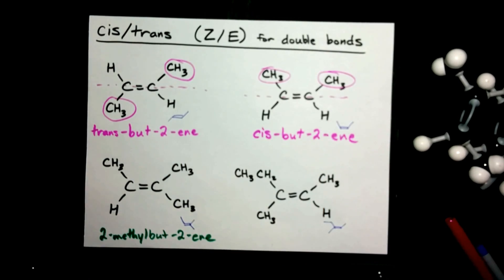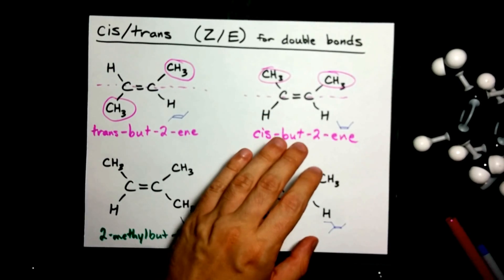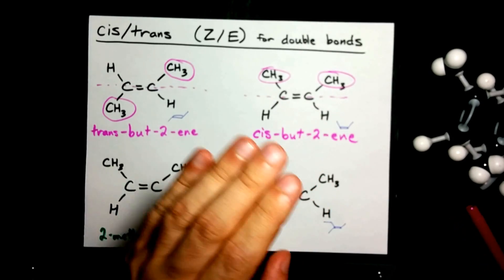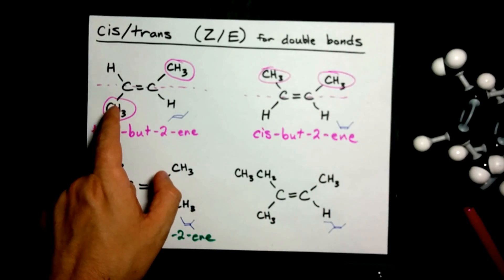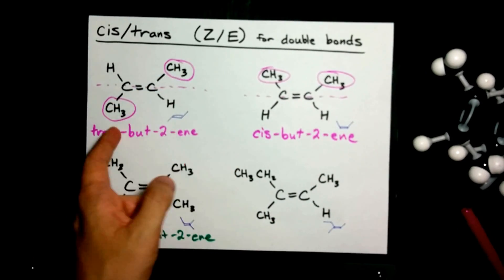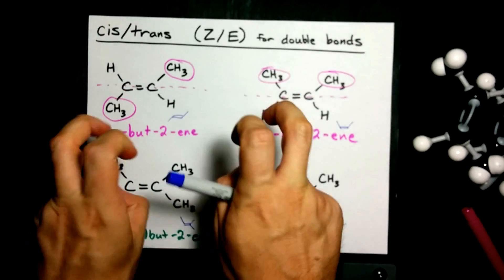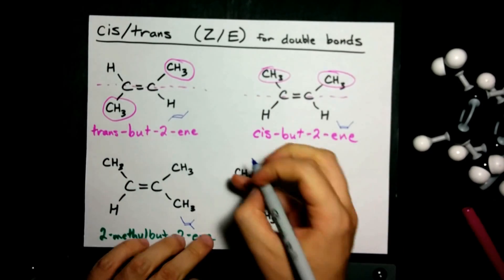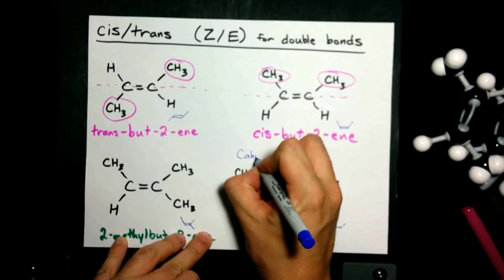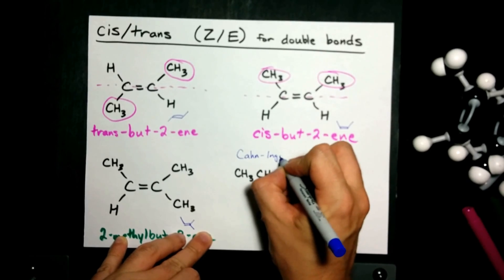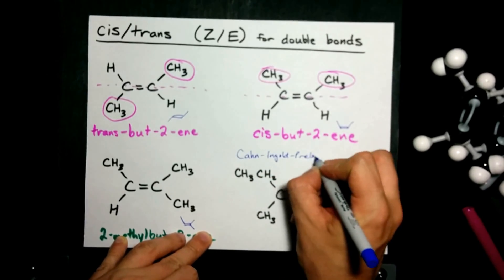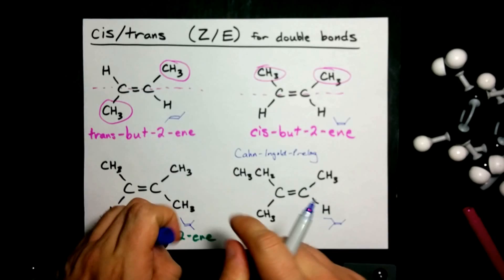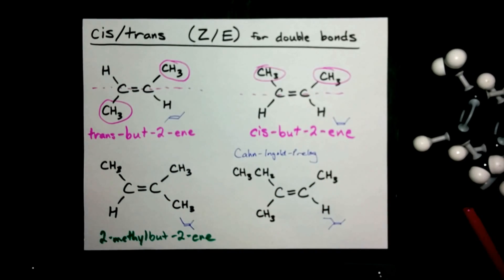I just want to also get across what happens if you have a more complicated molecule. You probably just took for granted that I said the CH3 groups were the important ones here. What it really comes down to is a set of rules called Cahn-Ingold-Prelog, which tell you which groups have precedence over each other.